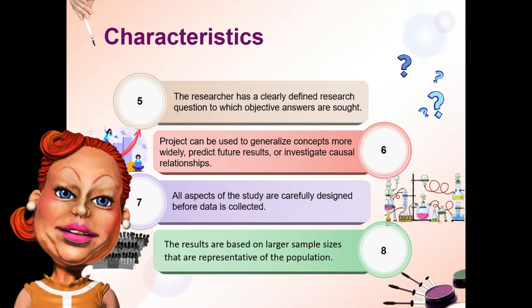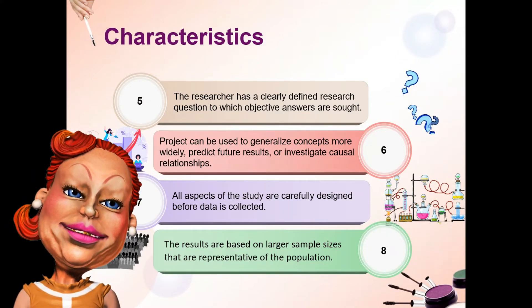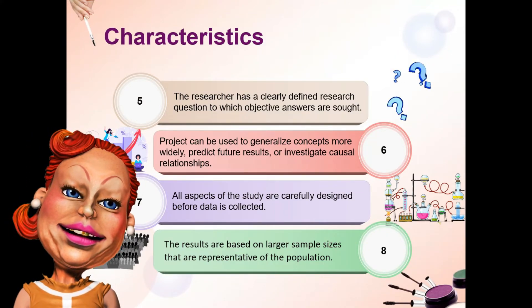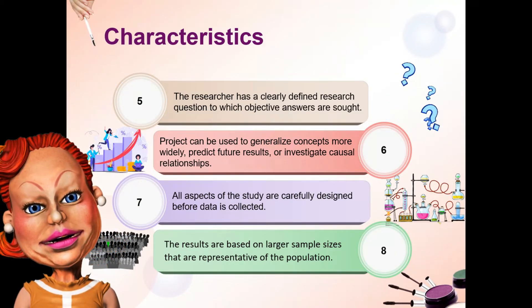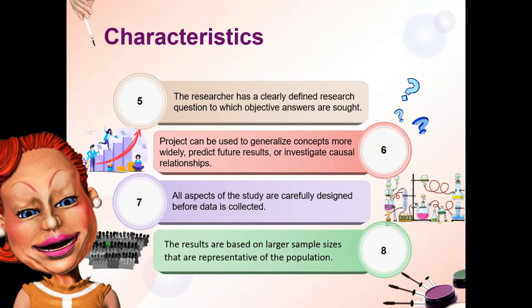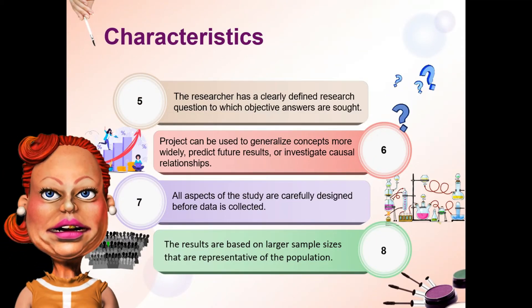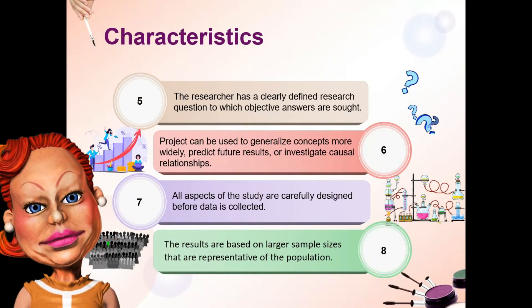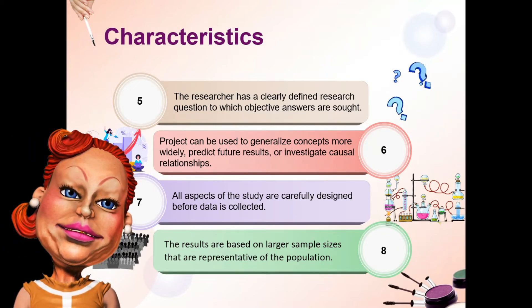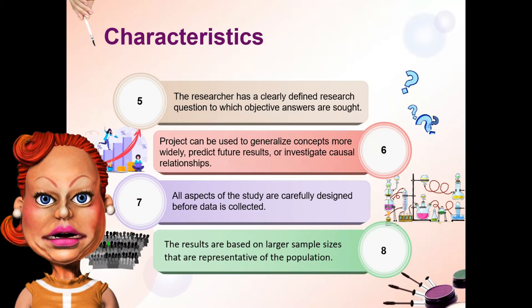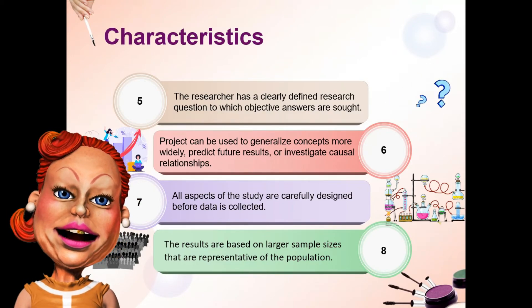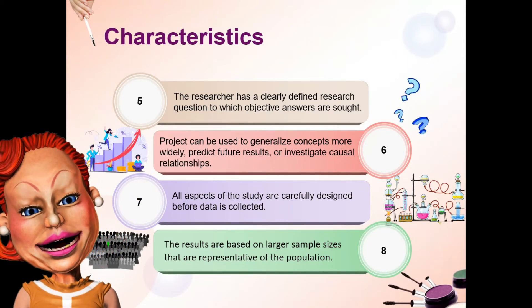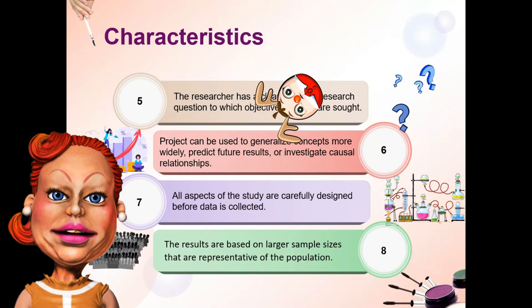Speaking of population, ibig sabihin maraming tao. Alam nyo, namimiss ko na talaga yung asawa ko. Alam niya ba kung anong pinaka nakakakilig sa ginawa niya? Yun yung nag-propose siya sa akin sa harap na maraming tao — tapos lumuhod siya sa harap ko para kunin niya ang kamay ko at alokin ako ng kasal. Hanggang ngayon naalala ko pa — ang bawat sandali na yun, para bang walang katapusan.